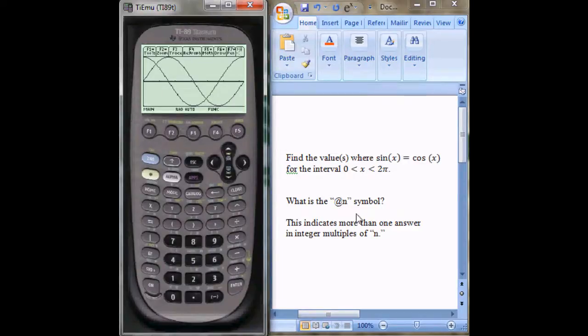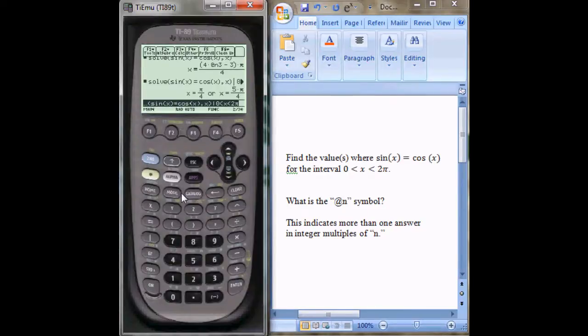And that's what the at n symbol is on the TI-89. And this is how you can get two answers for a single interval if that's what you're trying to do. Hope this video helps. Thanks.